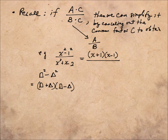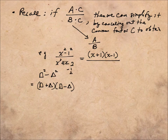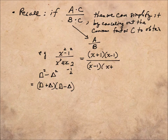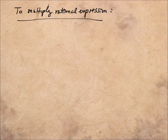On the bottom, we factor the quadratic polynomial by looking for factors that multiply to negative 2 and add to positive 1. The candidates are 1 and 2; placing the negative with the 1 gives factors x minus 1 times x plus 2. The common factor x minus 1 appears in both numerator and denominator, so we cancel it, reducing the expression to x plus 1 divided by x plus 2. That is the final answer.